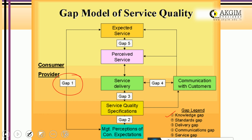The Knowledge Gap happens when there is a gap between what the customer expected and what management perceives about the customer's expectations. Marketers conduct surveys and market research to understand customer expectations, but customers may not express their expectations very clearly. This can lead to misunderstanding — the company or management may perceive those expectations differently. This is Gap 1.